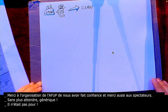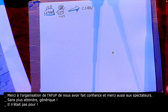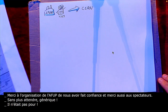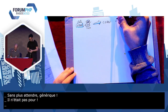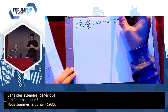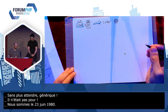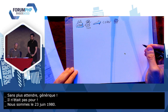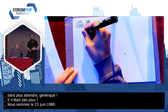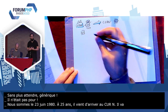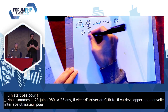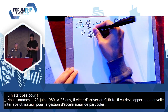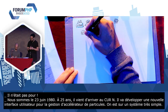Nous sommes le 23 juin 1980. Tim Berners-Lee a tout juste 25 ans et il vient d'arriver au CERN. Ici, il va faire une mission qui va consister à développer une nouvelle interface utilisateur pour la gestion de l'accélérateur de particules. On est sur un système très simple : 24 lignes, 64 caractères par ligne.